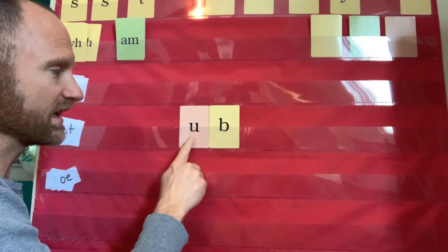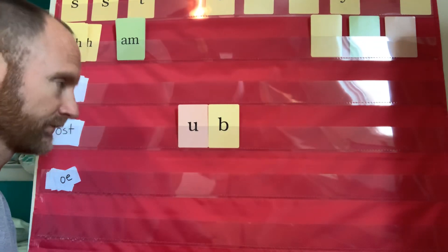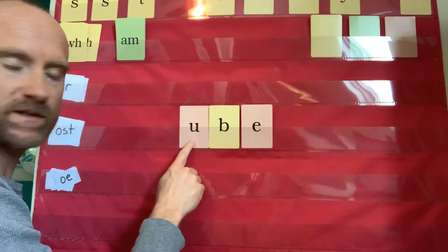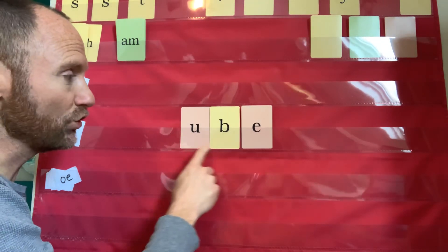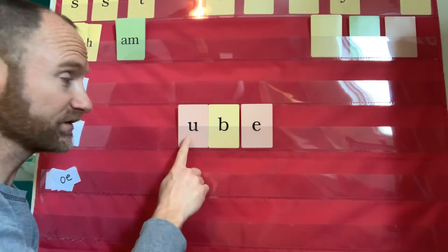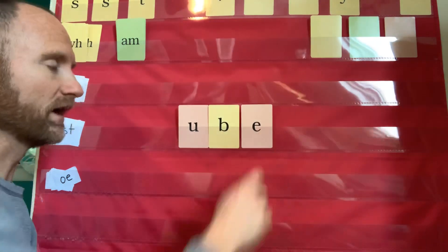Now I have a vowel, a consonant, and an E. What sound's that vowel gonna make? O. Blend it. Obe. Good. Closed syllable. What sound? U. Blend it. Ub. Vowel, consonant, E. What sound's U gonna make? Oo. Blend it. Oob. What other sound can a U make? It also says its name. U. Blend it. Ube.